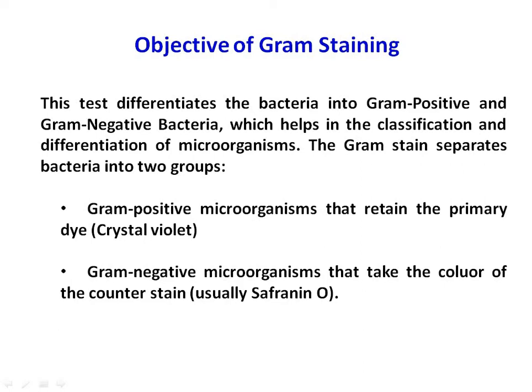If the slide is examined at this point, all the cells would be deeply stained and appear blue-purple. Then 95% ethyl alcohol is applied and renewed until all but the thickest part of the smear have ceased to give off the dye. The differential feature of the stain now becomes apparent.